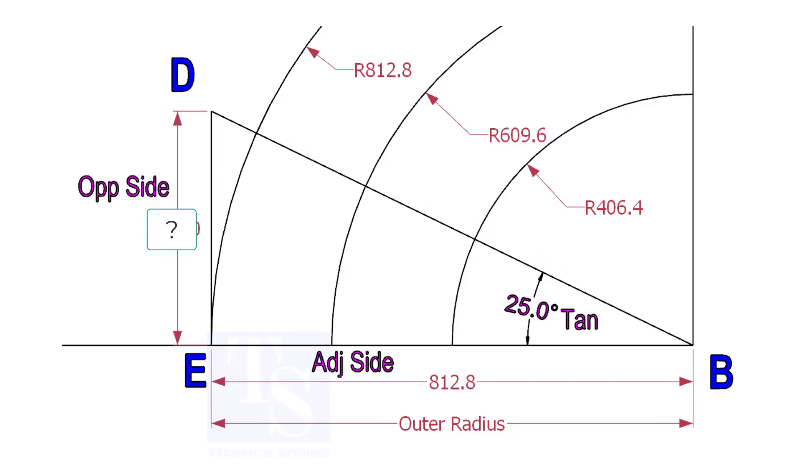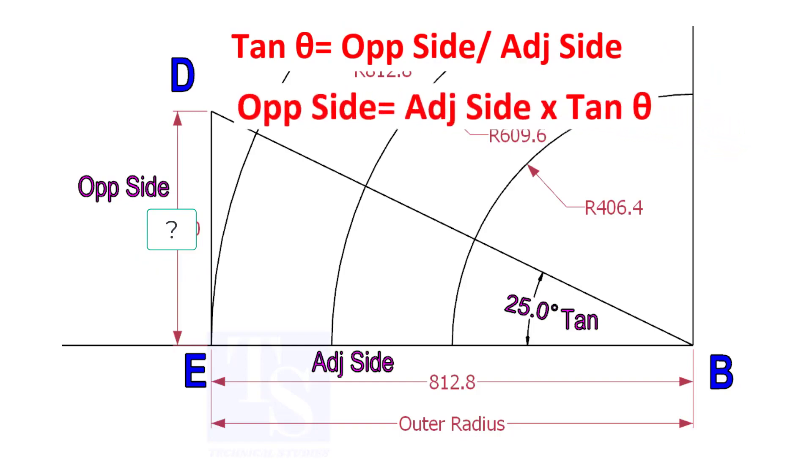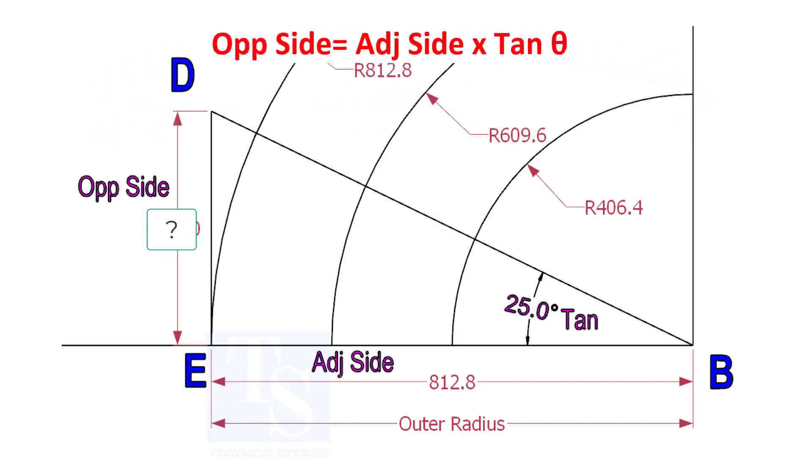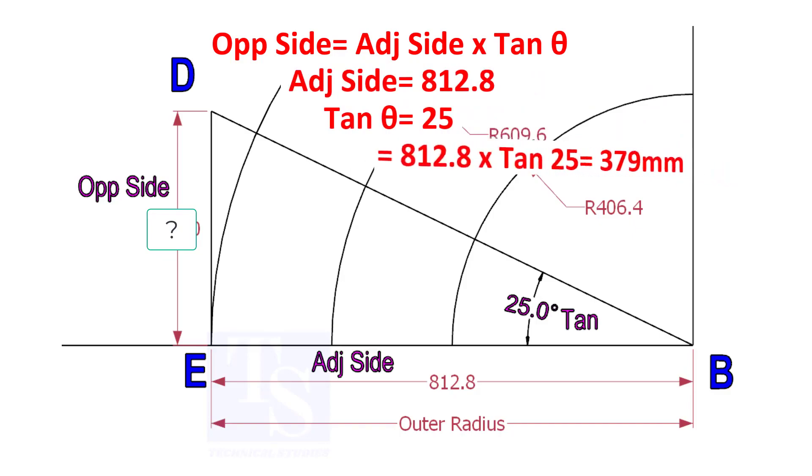To draw the line DB, we need to know the length of the line ED. To calculate ED, we need to apply the formula: tan-theta equals opposite side divided by adjacent side. Opposite side equals adjacent side multiplied by tan-theta. 812.8 into tan-25 equals 379 millimeters.